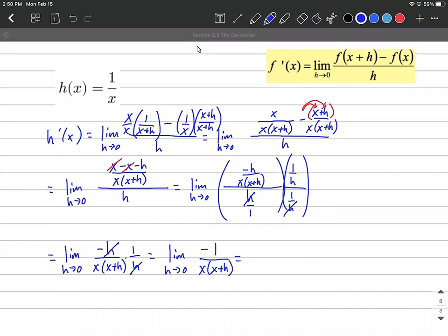So to finish this up, what we'll do is we'll plug in 0 for our h. So we have negative 1 over x times x plus 0, which makes negative 1 over x times x will make x squared. And there's our derivative.